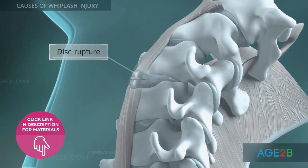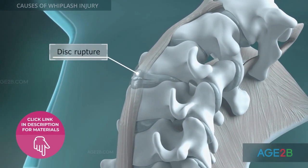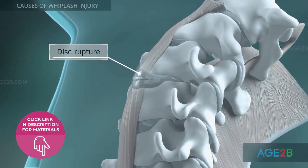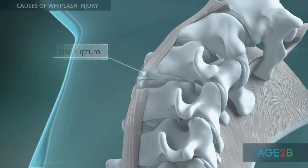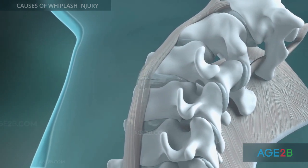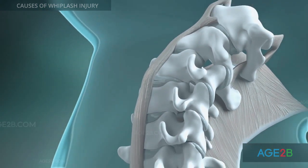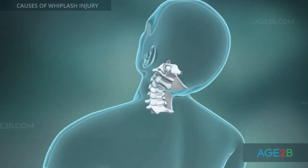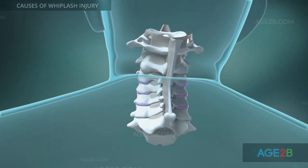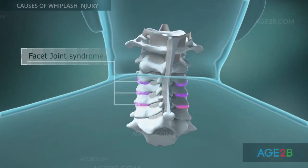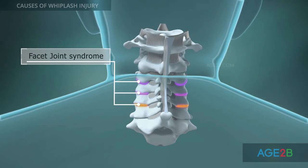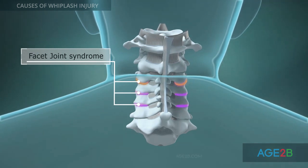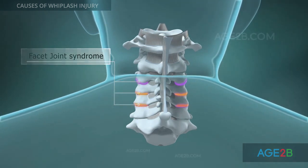The outer wall of the disc can be torn during the hyperextension phase of the whiplash injury. Painful facet joint syndrome often occurs after the whiplash injury because facet joints may be damaged during hyperextension.